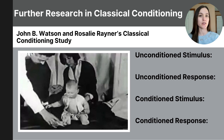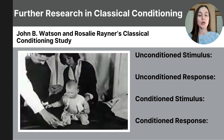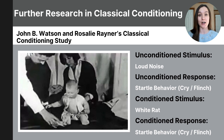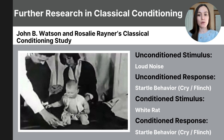Let's practice identifying the components of classical conditioning in this study. The unconditioned stimulus is the loud noise, which naturally causes the unconditioned response — the startle behavior of crying and flinching. When the loud noise was paired with the rat, Little Albert developed a new learned behavior: the white rat became the conditioned stimulus, and he learned to startle and cry at the sight of the white rat, which became the conditioned response.